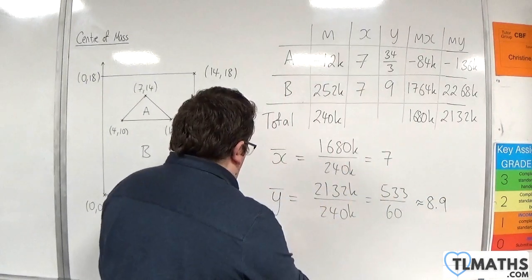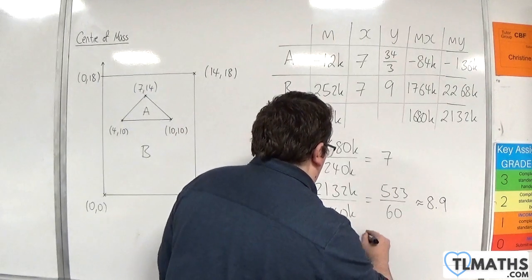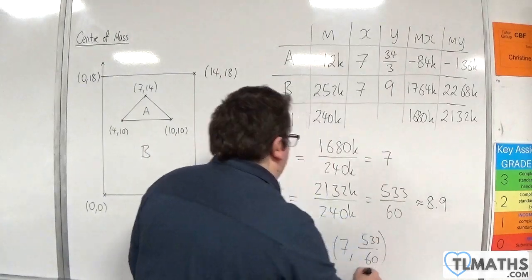So the centre of mass is at 7, 533 over 60.